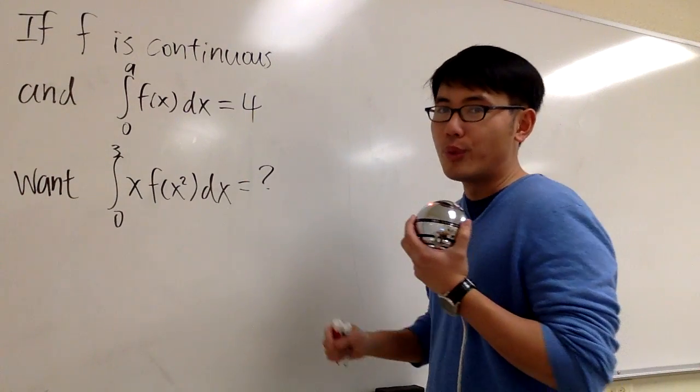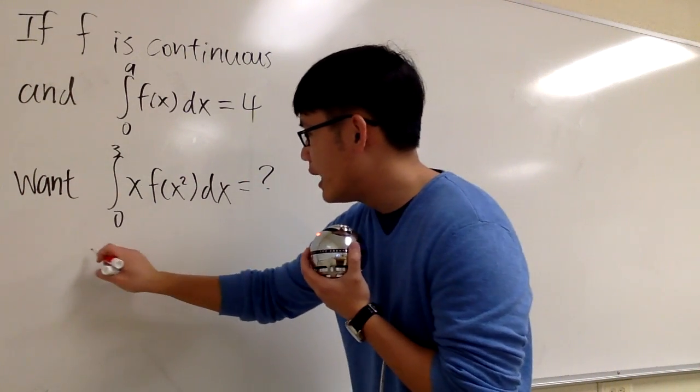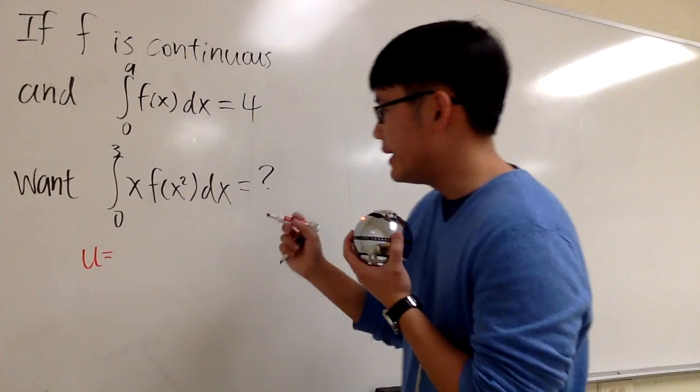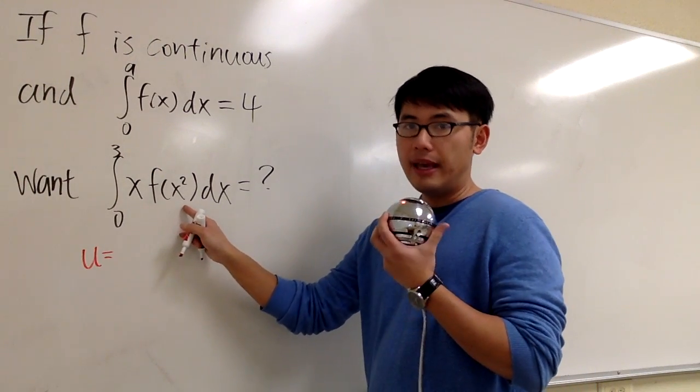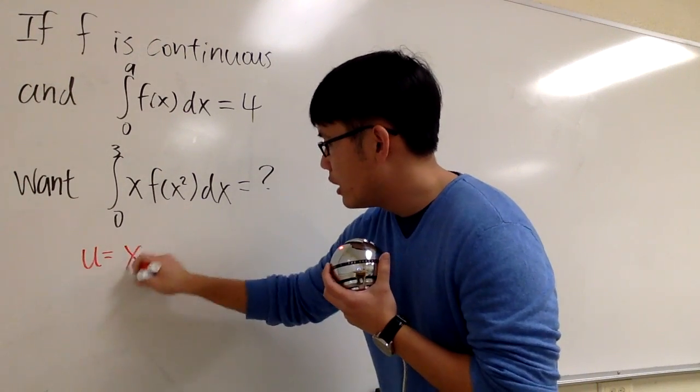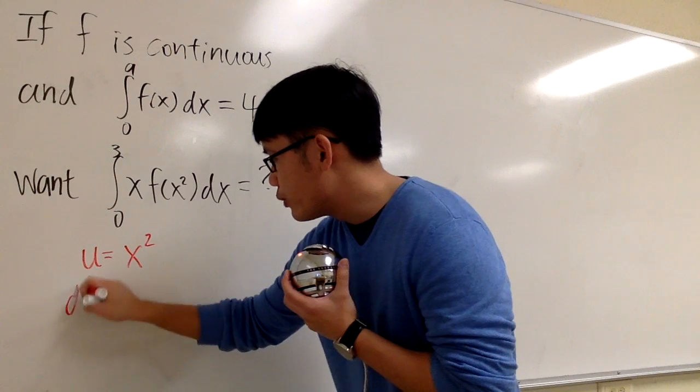I will begin right here. I will say u equals the inside function, which we can pick x squared to be that. So u is equal to x squared, and then do the u substitution.